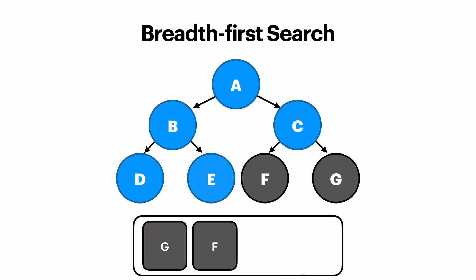We visit E, which is the top of the queue, we visit F and we visit G and now our queue is empty, so our breadth-first search is complete.